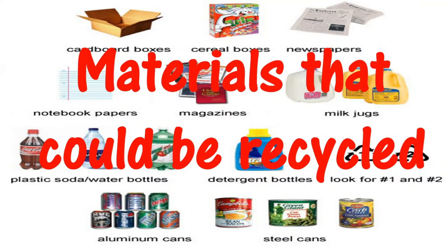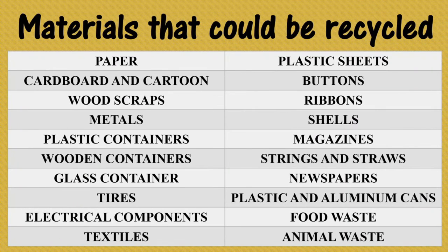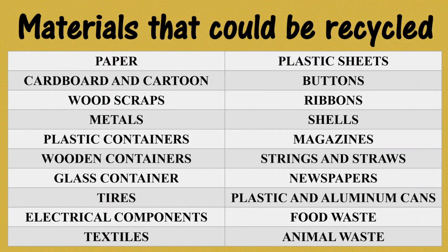Materials that could be recycled and made into new products include: paper, cardboard, wood scraps, metals, plastic containers, wooden containers, glass containers, tires, electrical components, textiles, plastic sheets, buttons, ribbons, shells, magazines, strings and straws, newspapers, plastic and aluminum cans, food waste, animal waste, and many more.